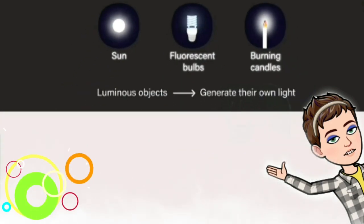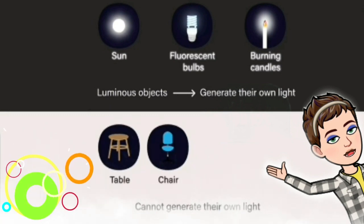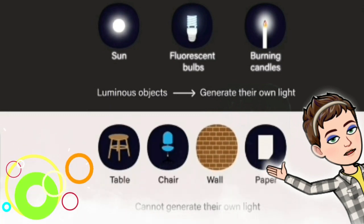Almost all of the objects that we come across cannot generate their own light. The table, the chair, the wall, the paper are a few such examples. Such objects are called non-luminous objects.